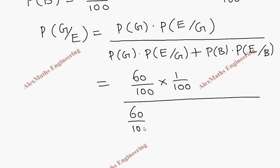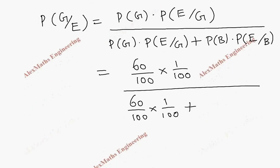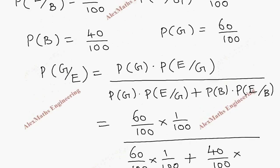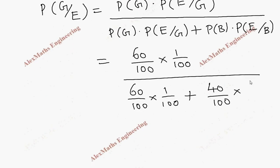We have to copy this value. We have the same term present in the denominator first. Then P of B is 40 by 100. And the percentage P of E by B is 4 by 100.